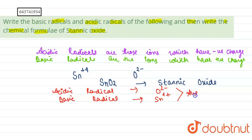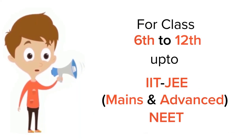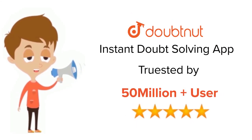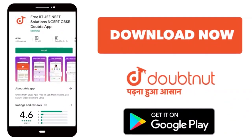So these are our answers for acidic and basic radicals, and the chemical formula for stannic oxide is SnO2. For class 6 to 12th, IIT-JEE and NEET level, trusted by more than 5 crore students, download Doubtnut app today.